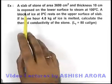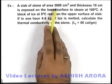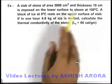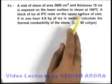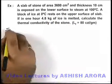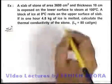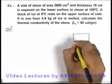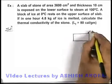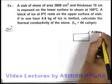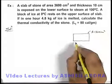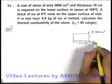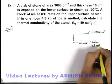In this example, we are given that a slab of stone of area 3600 centimeter square and thickness 10 centimeter is exposed on the lower surface to steam. If we draw the figure, we are given a stone slab having surface area 3600 centimeter square. At the lower surface, it is exposed to steam at 100 degree centigrade.